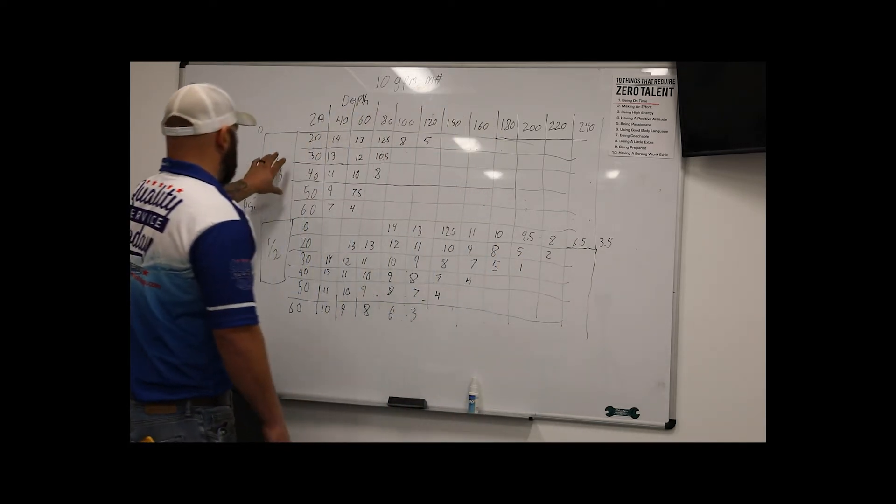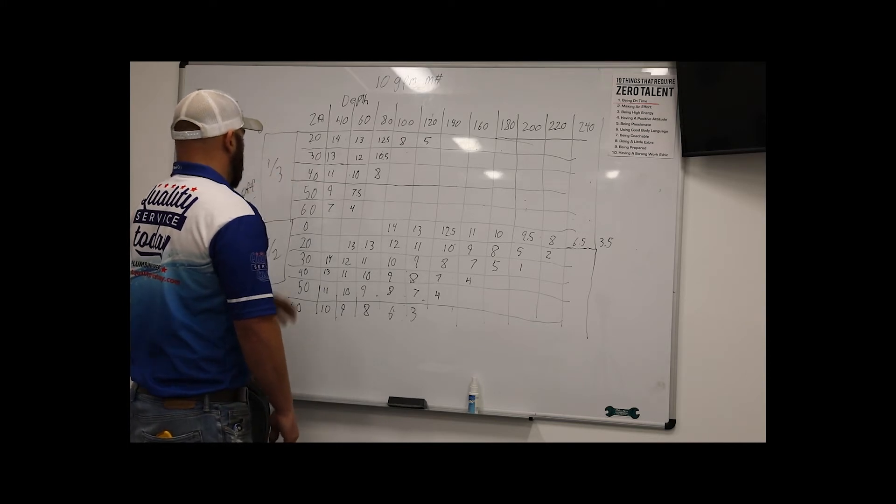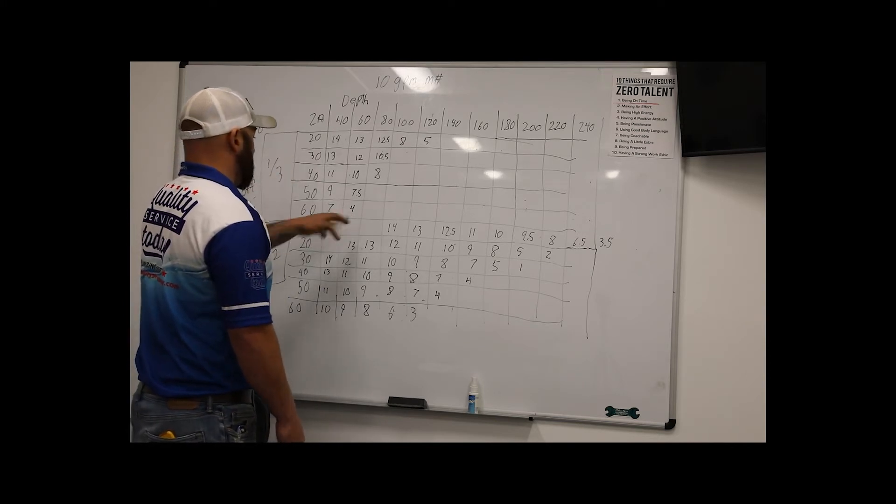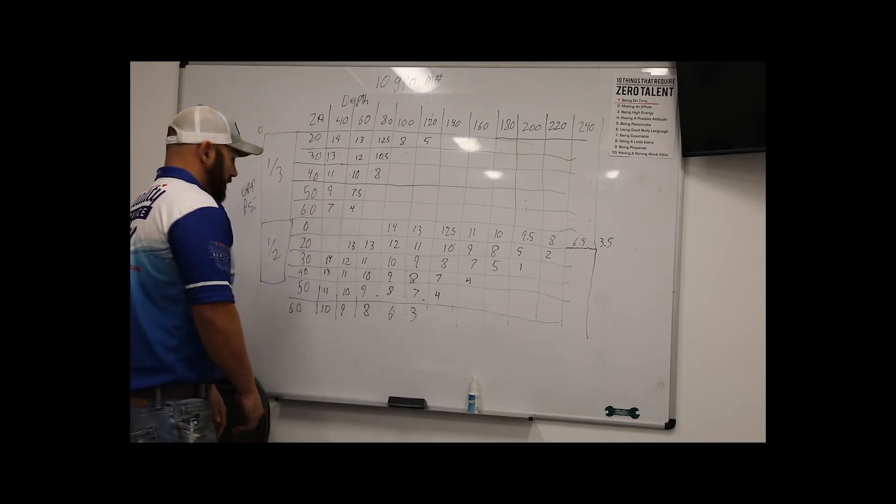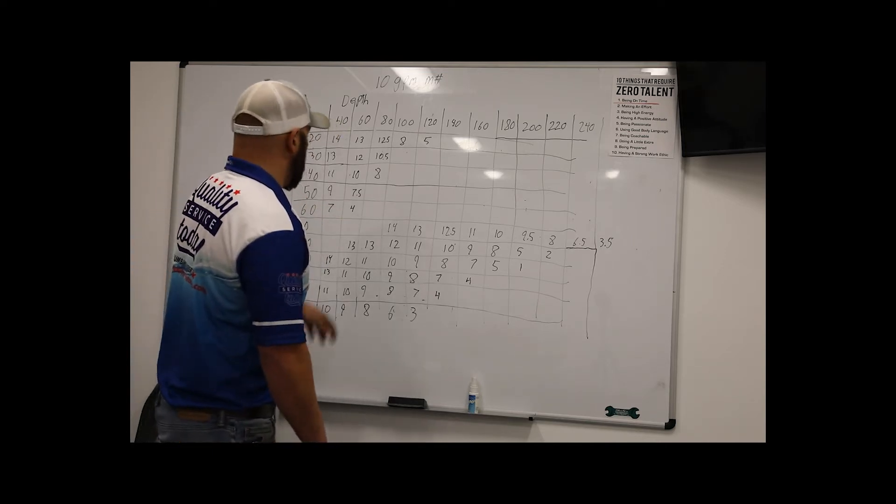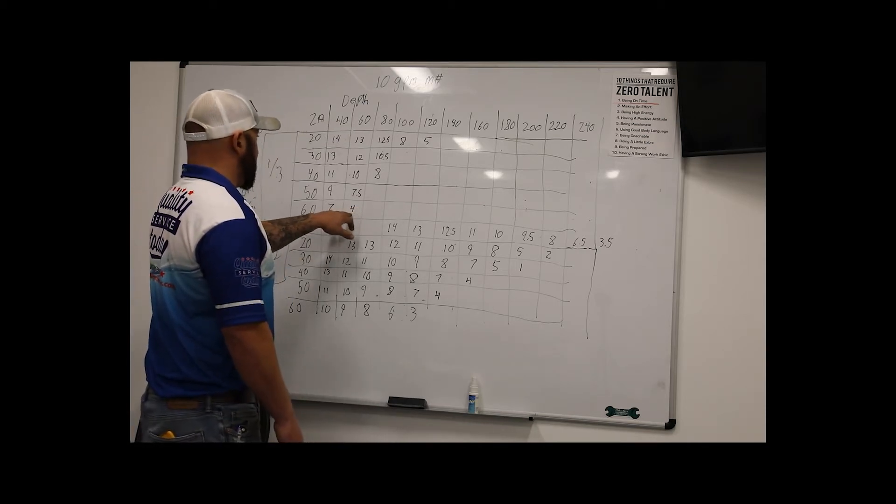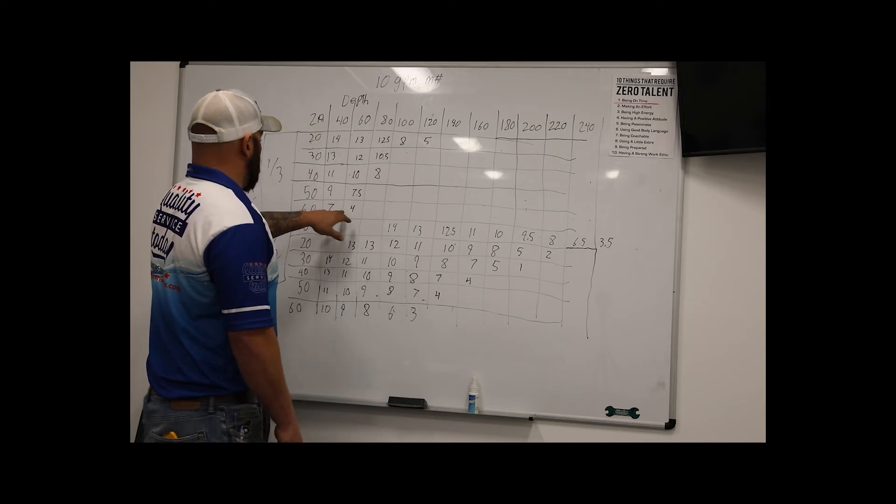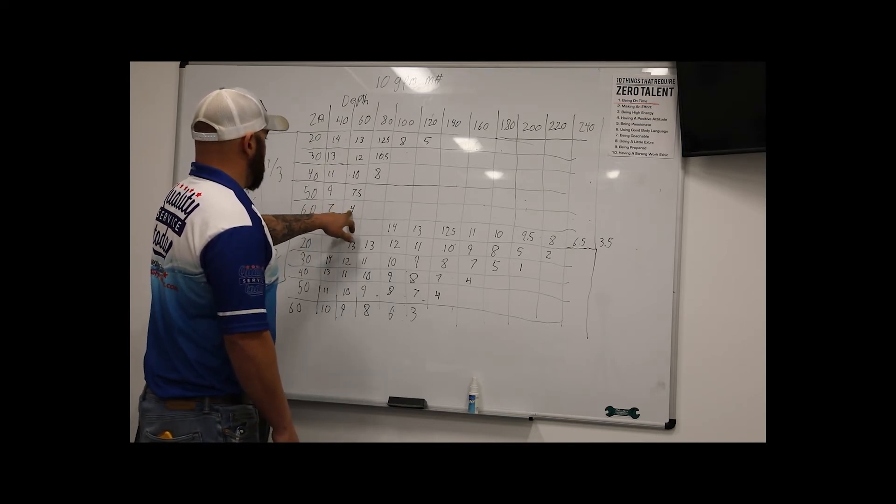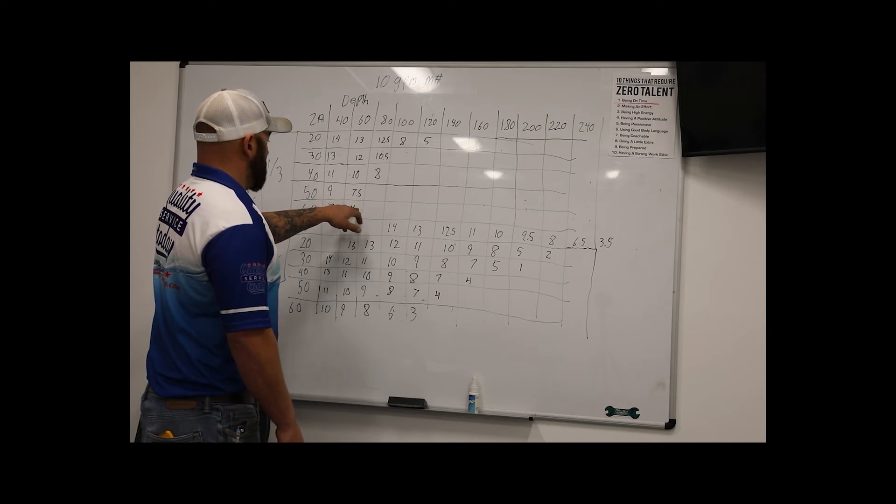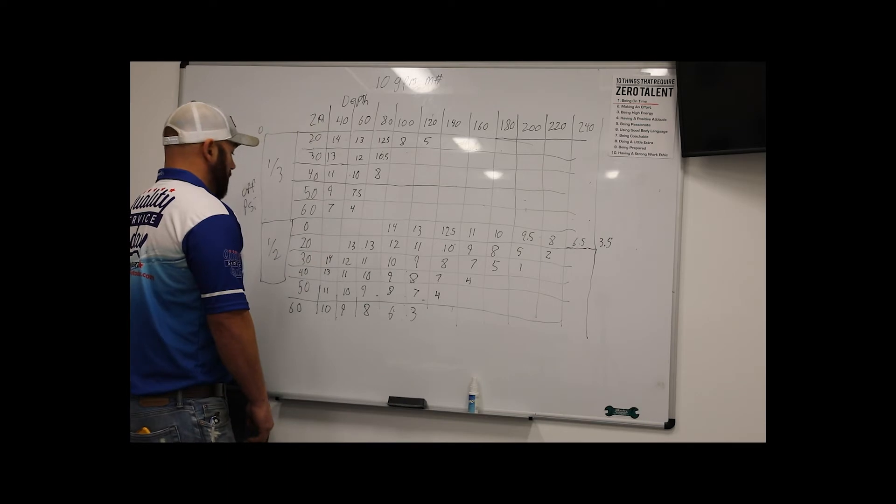So, for instance, the third horsepower, 10 gallon a minute pump, at 60 PSI, you can only hang it 60 foot deep, 4 gallons a minute. That's where I was talking about in the other video, if you have a low gallon a minute well, if you size the pump properly, if you have a 4 gallon a minute well, and you size the pump at your off pressure and your depth, you're never going to over pump that well because it can only move as much water as what's coming into it.